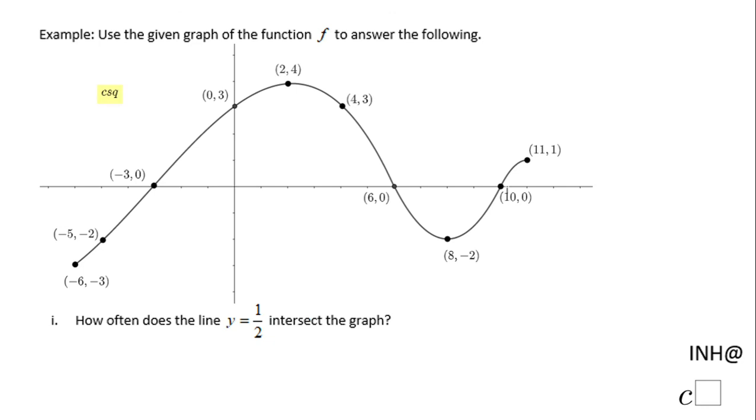Let's move to the next one which says how often does the line y equals one half intersect the graph? So one half, y equals one half is right here and I'm going to draw a horizontal line that means y equals one half, and you need to count how many times this line intersects your graph f of x, and that is 3 times.